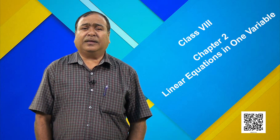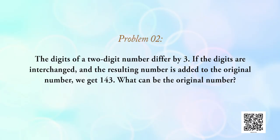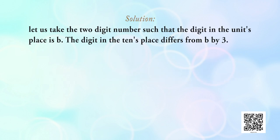Students, let us solve a word problem involving this type. The problem: the digits of a two-digit number differ by 3. If the digits are interchanged and the resulting number is added to the original number, we get 143. What can be the original number? Let the digit in the units place be b.